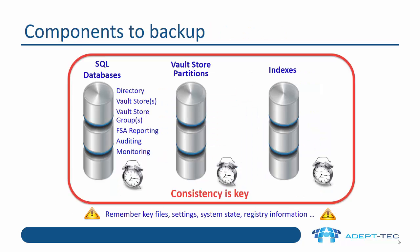In terms of the main components to back up: first, we have our SQL databases. The key databases are the directory database that contains all the configuration of Enterprise Vault, the Vault Store databases that contain references or metadata for the archived items, the Vault Store group or fingerprint databases that contain the hashes of every item we've archived, plus other databases like reporting, auditing, and monitoring databases.